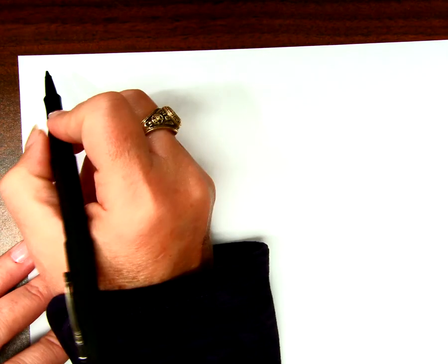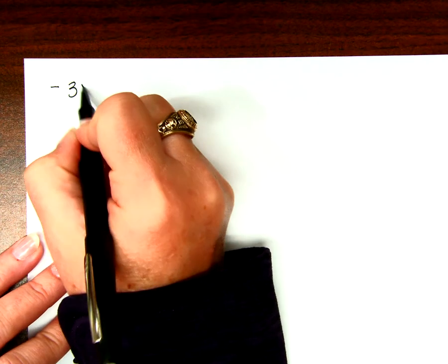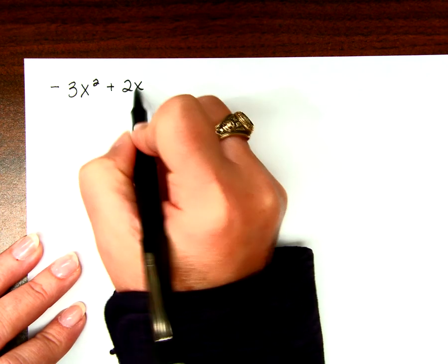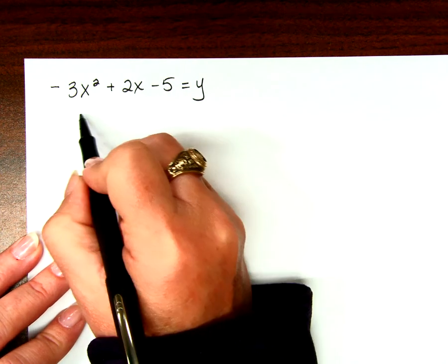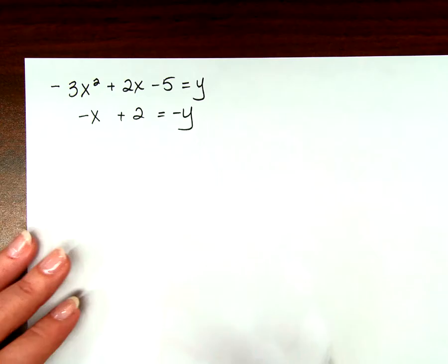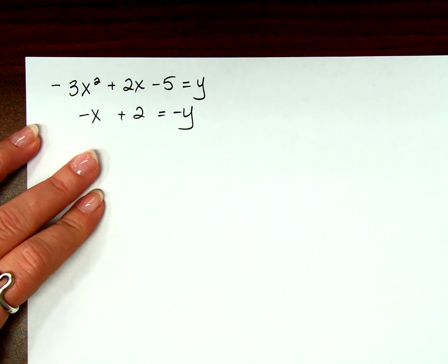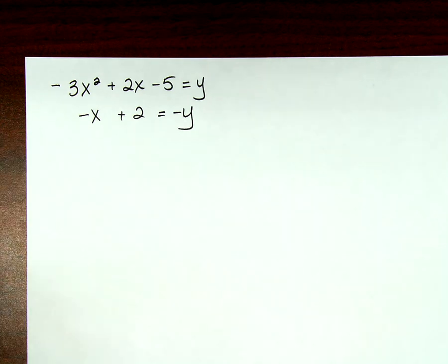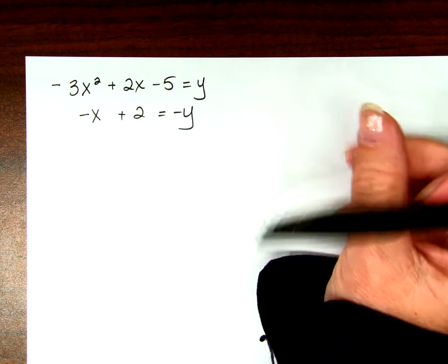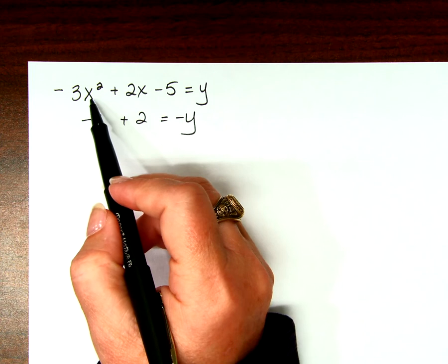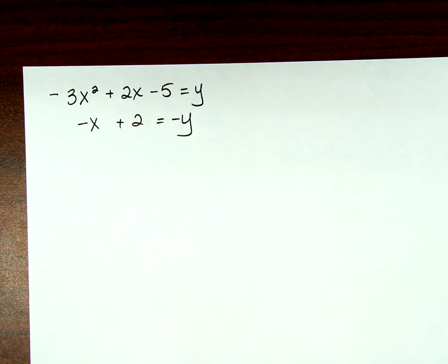I have to show you one more elimination example because I don't want you to get going on this without having seen it. Negative 3x squared plus 2x minus 5 equals y; negative x plus 2 equals negative y. If we're solving by elimination, can we eliminate the x's? No — because there's not an x-squared to even try to eliminate the x-squared, right? So for sure the y's would be easier.